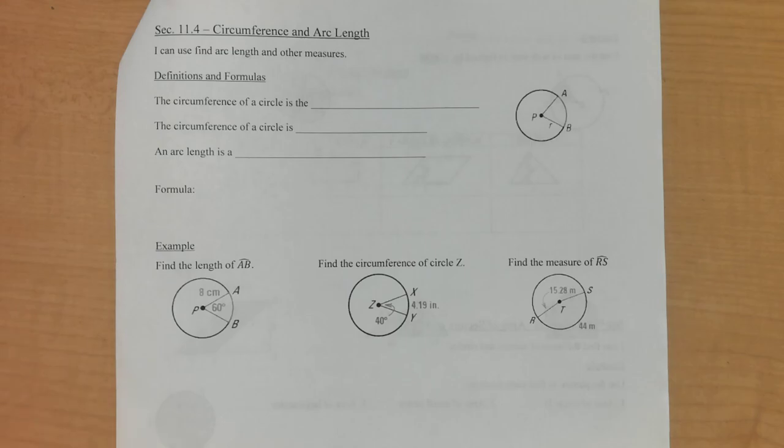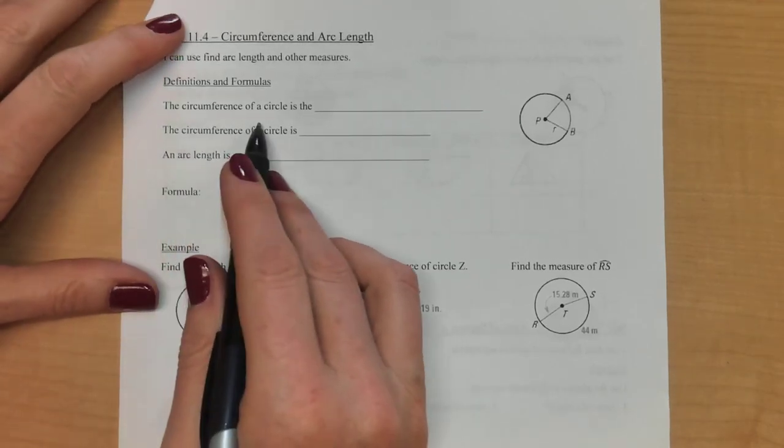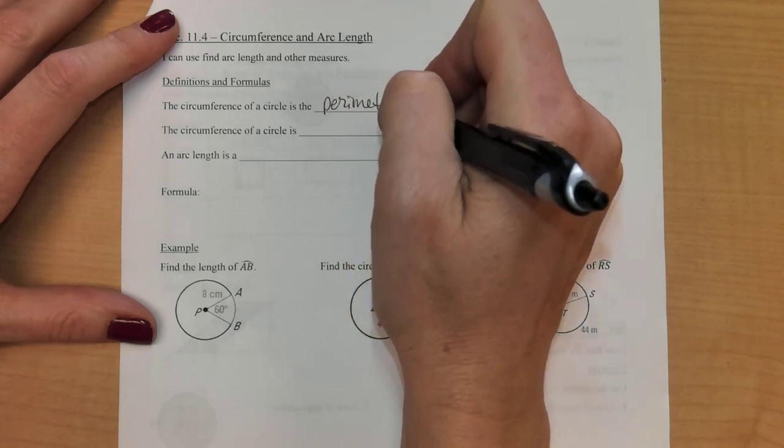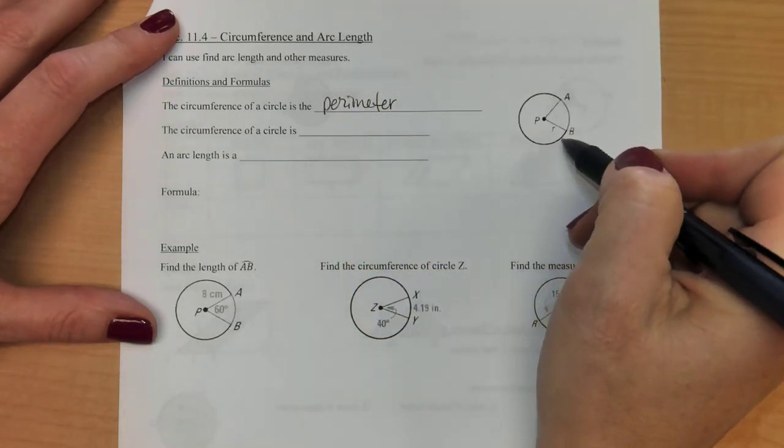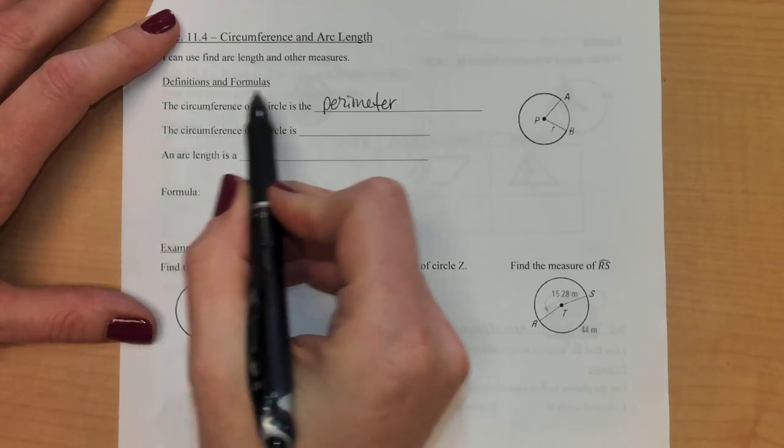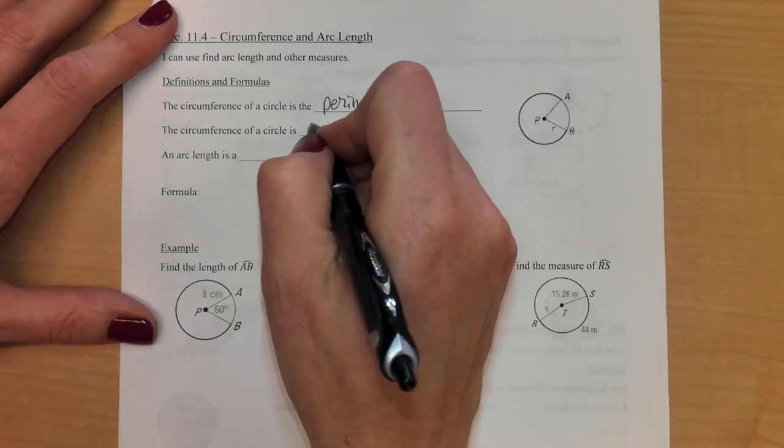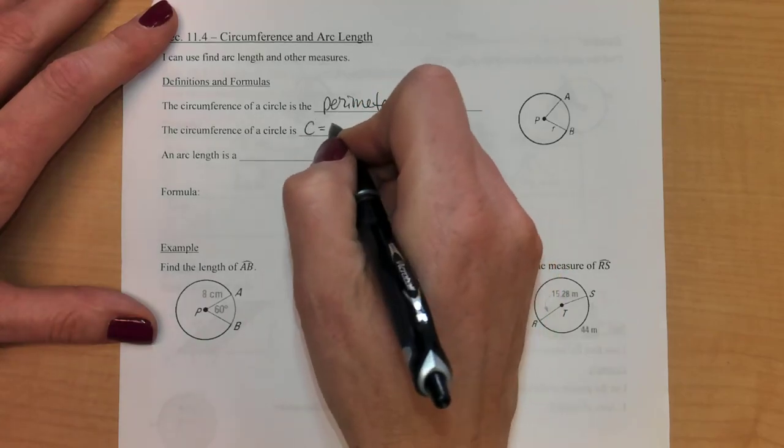Okay, this is section 11.4 and today we're going to talk about circumference and arc length. So the circumference of a circle is just the perimeter. When we get to circles, when we talk about the distance around, we call that circumference. On any other shape it would be called perimeter.